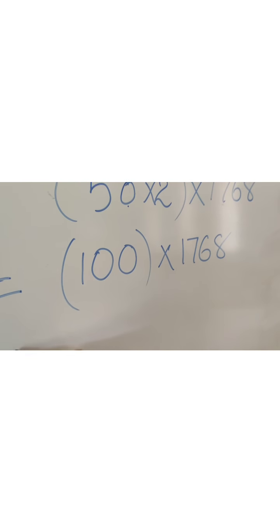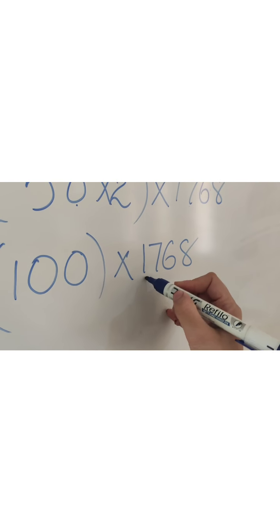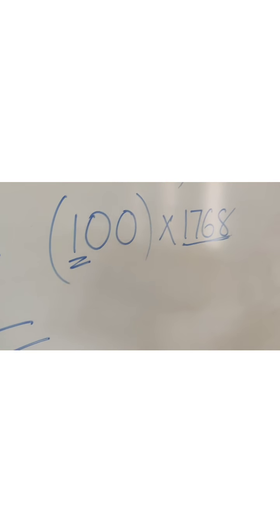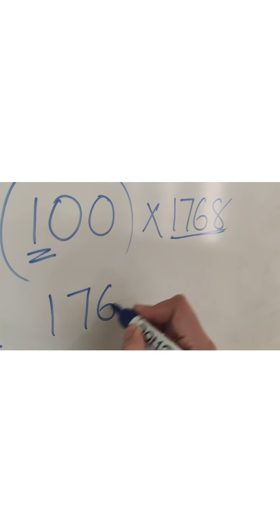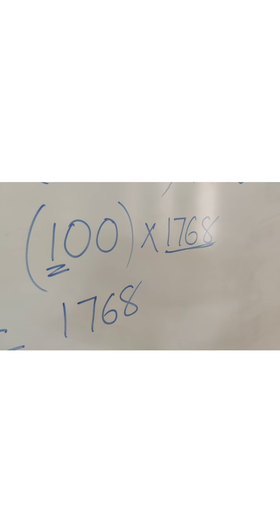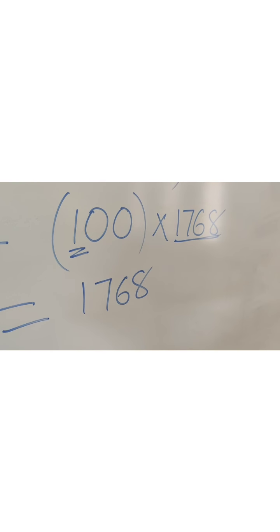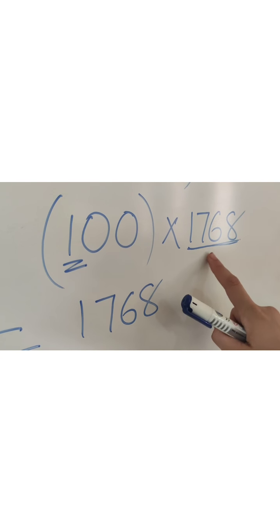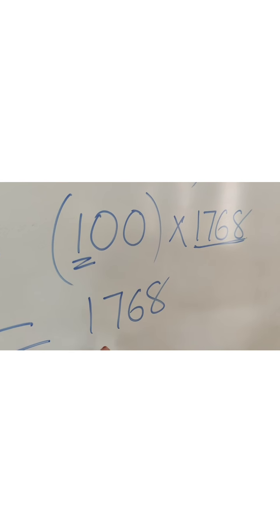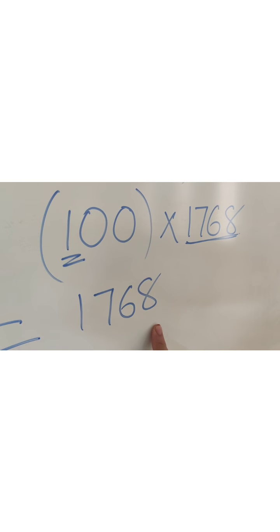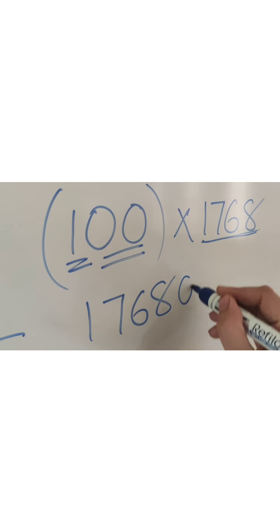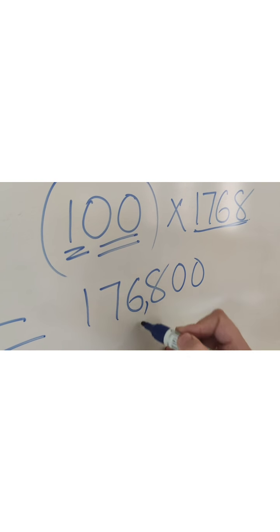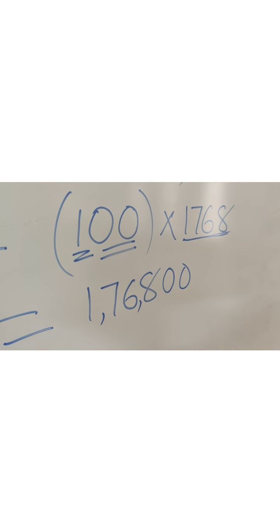Now, how do we solve 1768 × 100 easily? If you multiply any number by 1, the number remains the same — for example, 5×1=5, 9×1=9. So 1768 × 1 = 1768. And there are 2 zeros, so we add 2 zeros and place the commas. So the answer is 1,76,800.